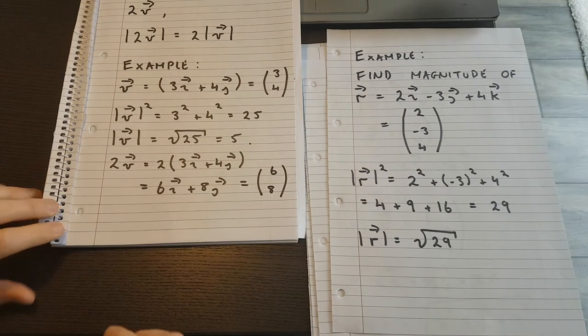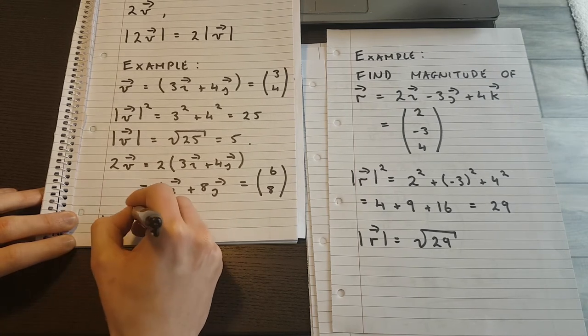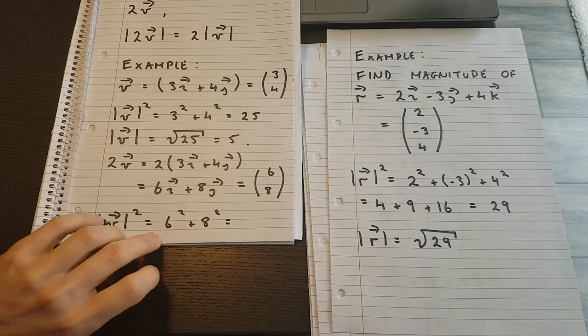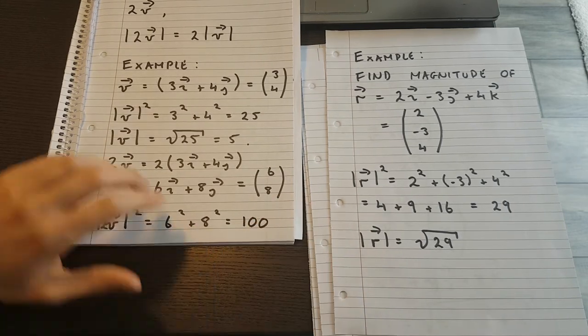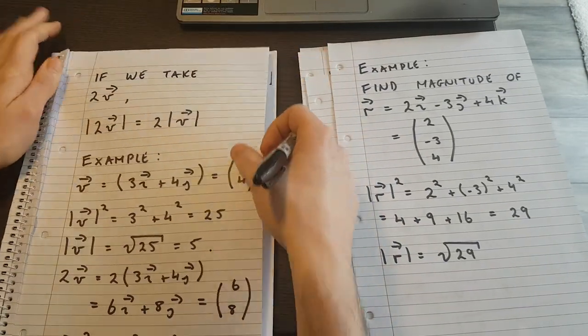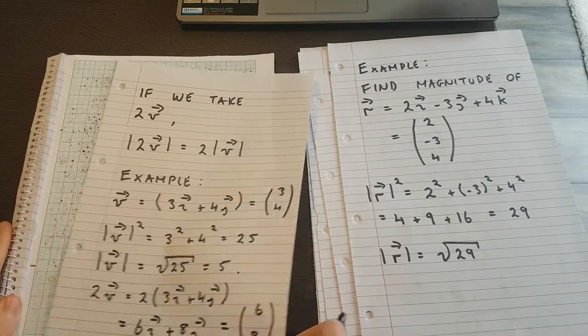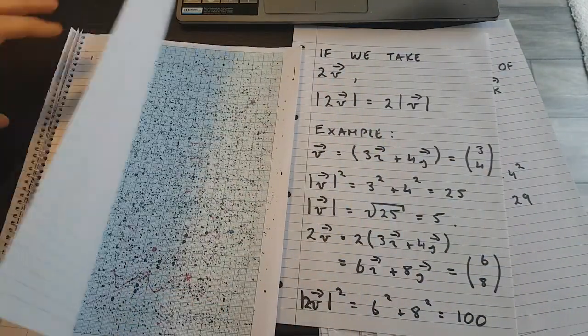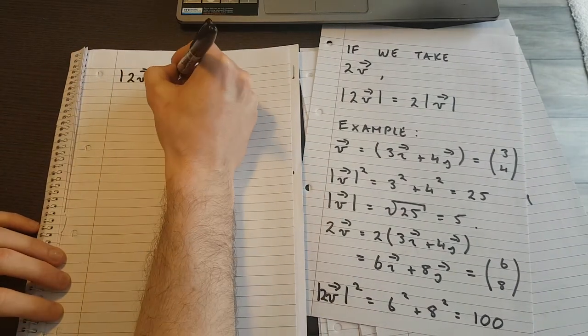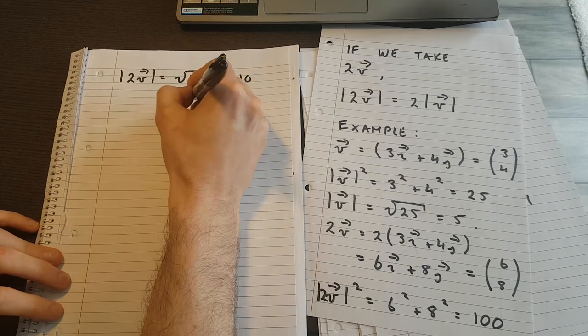Now what's twice v? Two times the vector v is equal to two times three i plus four j, which is what? Two times three is six i. Two times four makes eight j. Which is 6, 8. All I did was double the components. Pretty simple to do. And the length squared of two v squared is, well that's going to be six squared plus eight squared. Which is what? That's six squared is thirty-six, this is sixty-four, so that's actually one hundred. And you say, oh well, is that not too big? Is that not four times too big? And the answer is of course no, because that's not the length, that's the length squared. So now the length of two v is the square root of a hundred, which is ten, which is of course two times five.